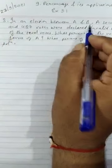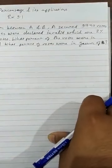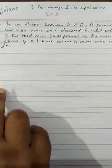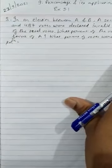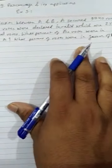In an election between A and B, A secured 9740 votes and 487 votes were declared invalid, which are 2% of the total votes. What percent of the votes were in favour of A and what percent of the votes were in favour of B?